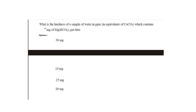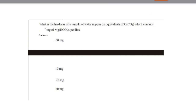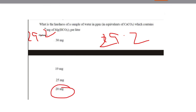Next question: what is the hardness of a water sample in ppm (as equivalent of CaCO₃) which contains 29.2 mg of Mg(HCO₃)₂ per liter? The options were 30, 19, 25, and 20 milligrams. Note: the weight 29.2 mg was missing in the question but should be 29.2. By solving, the answer is 20 milligrams.